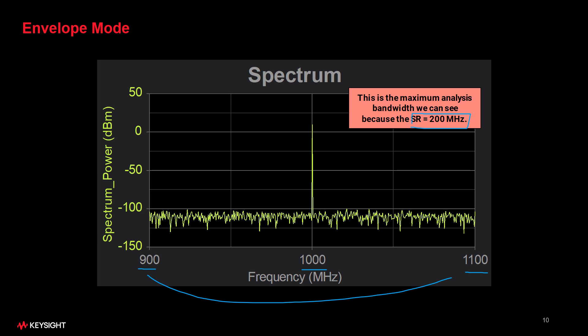Now, if you needed to see a wider bandwidth, you would increase the sample rate and keep increasing it as you want to see more and more. But there's a limit. Envelope isn't for doing an exhaustive spur search. That's what Spectrasys was for.